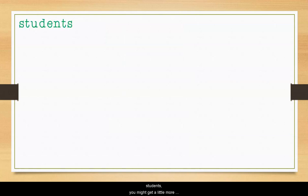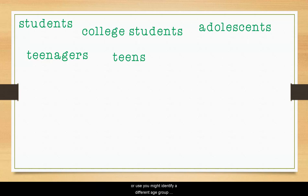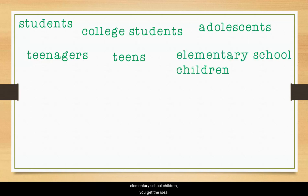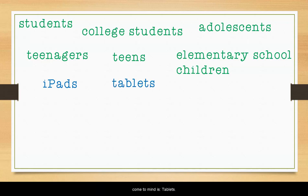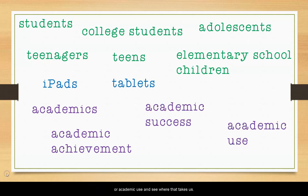For example, with the keyword students, you might get a little more specific for the kind of student: college students, adolescents, teenagers, teens, or you might identify a different age group altogether, like elementary school children. For iPads, the only other word that may come to mind is tablets. For academics, we could use academic achievement, academic success, or academic use and see where that takes us.